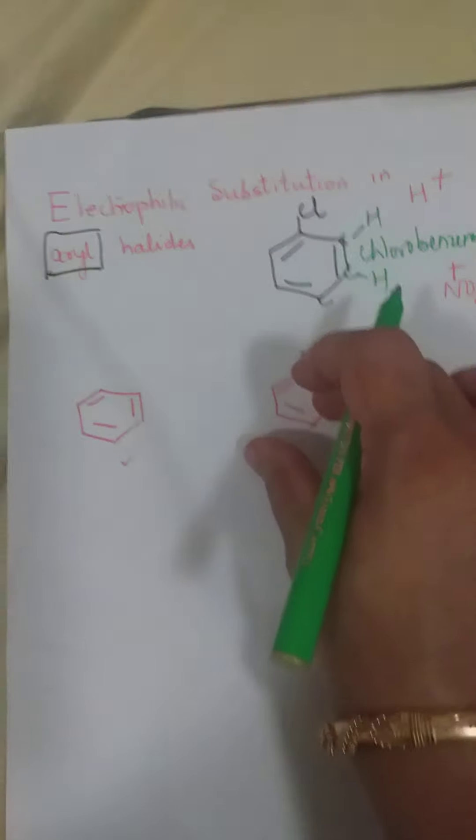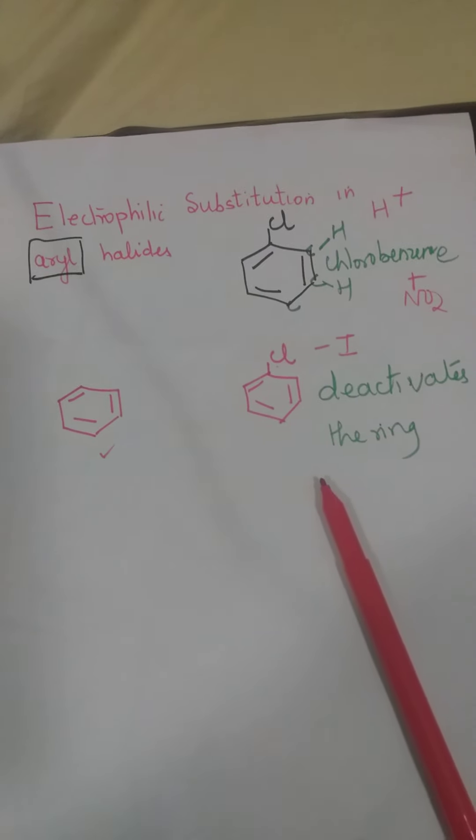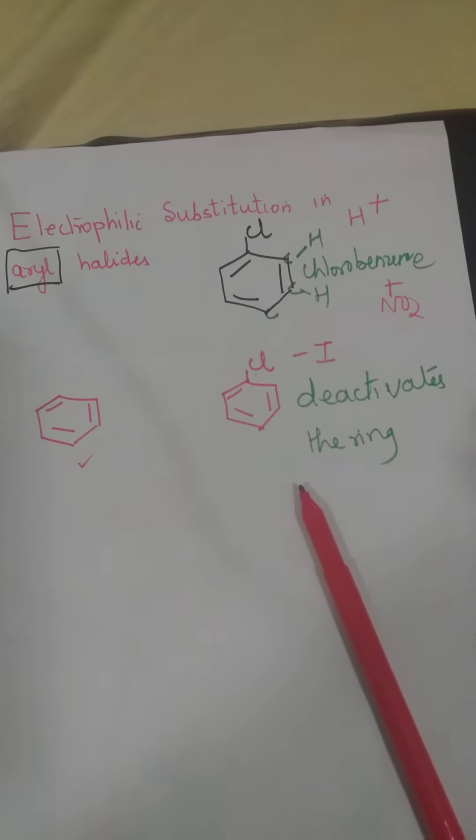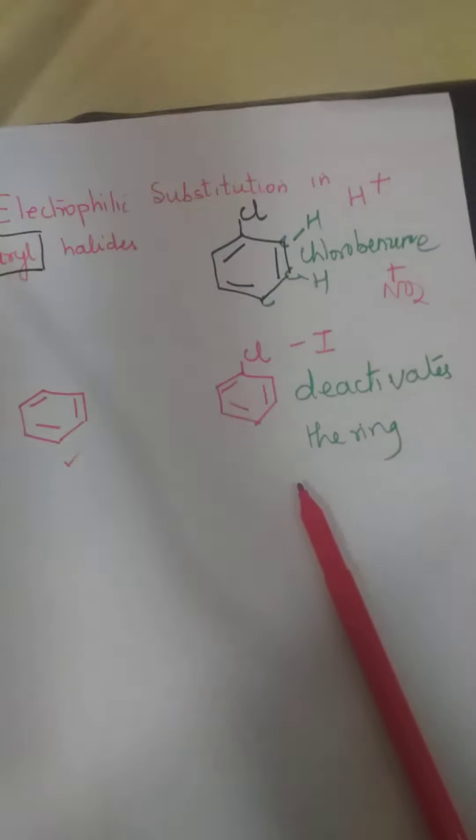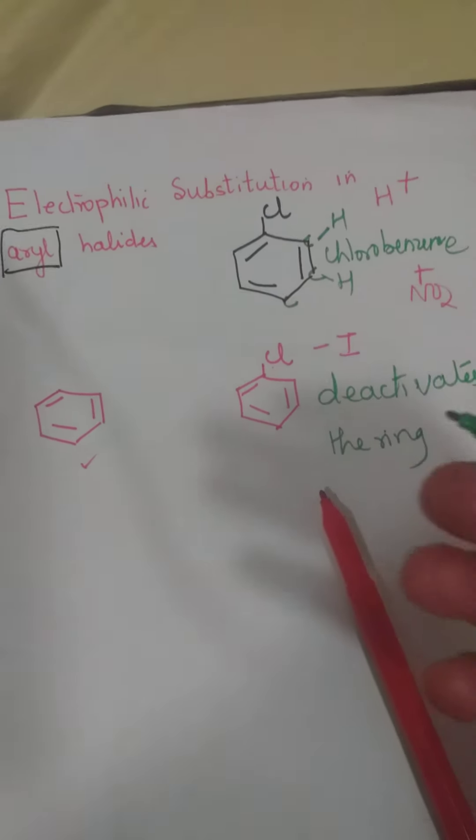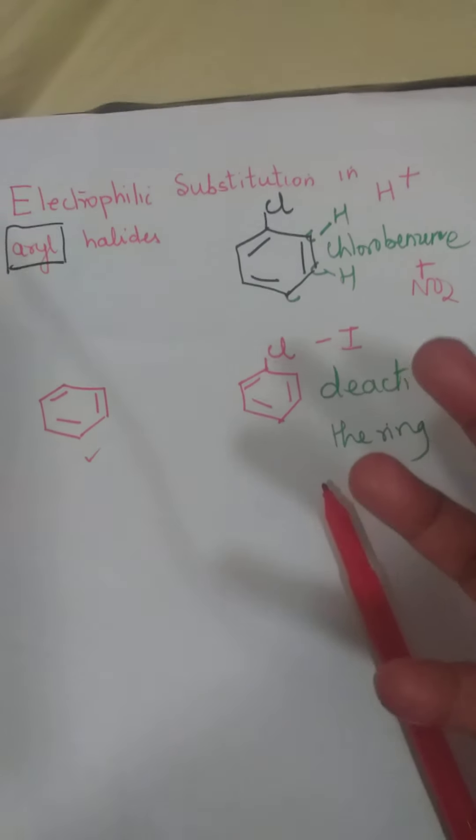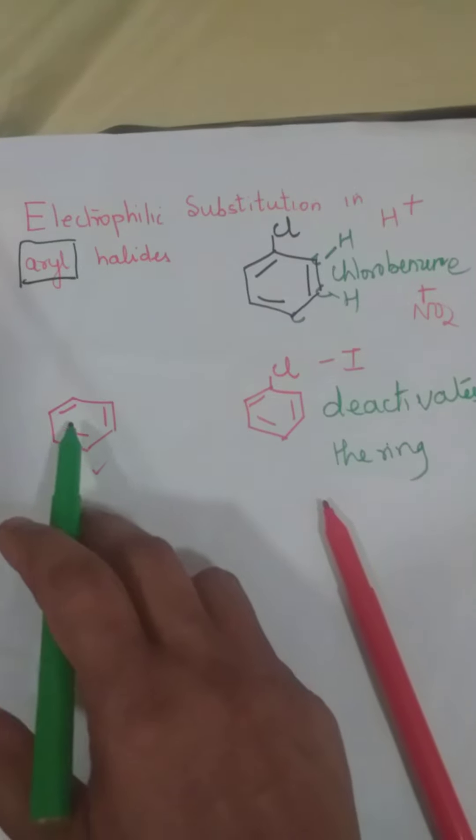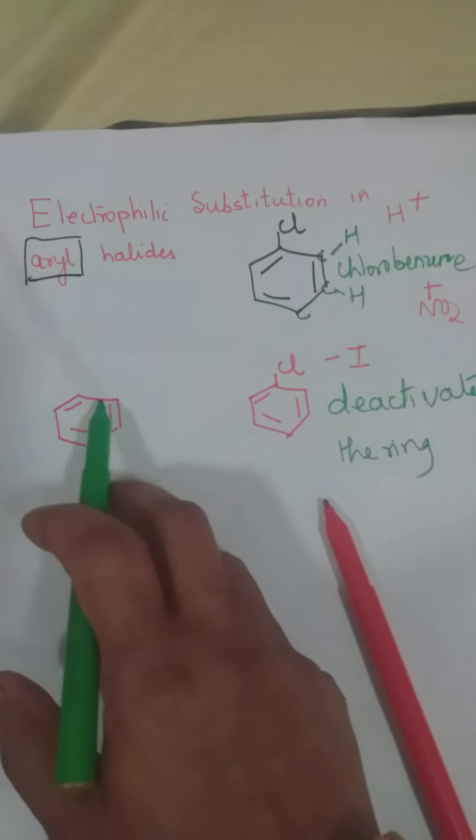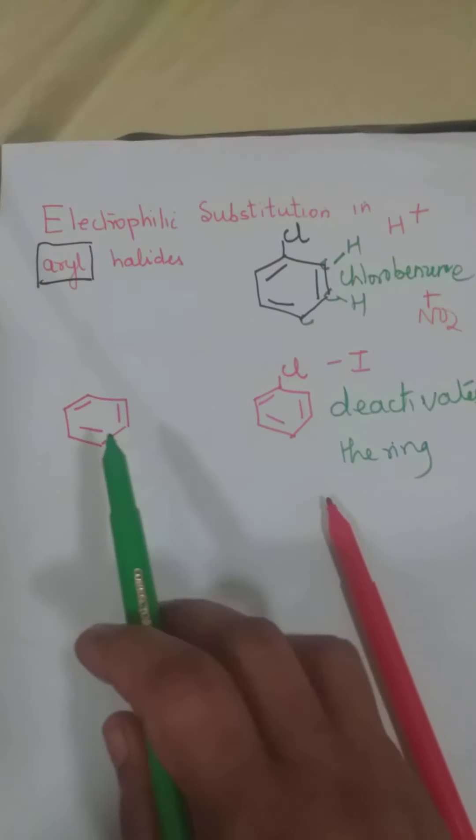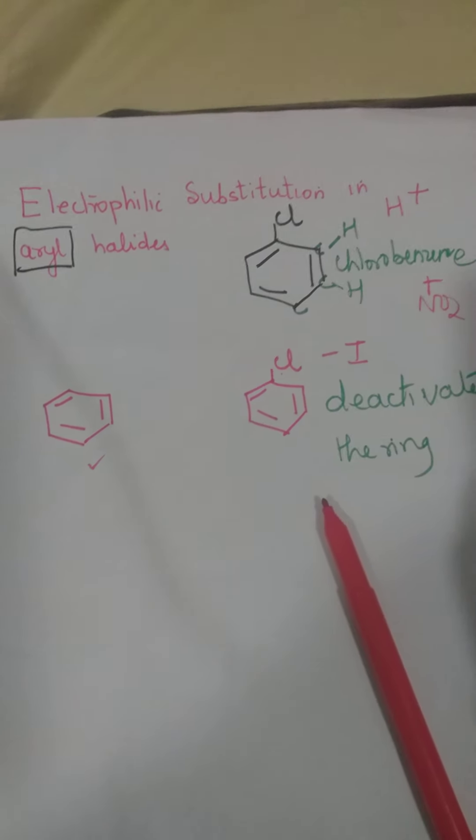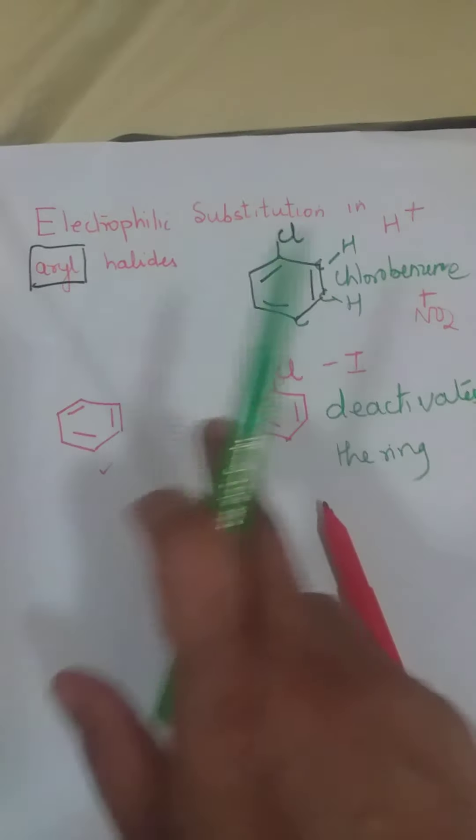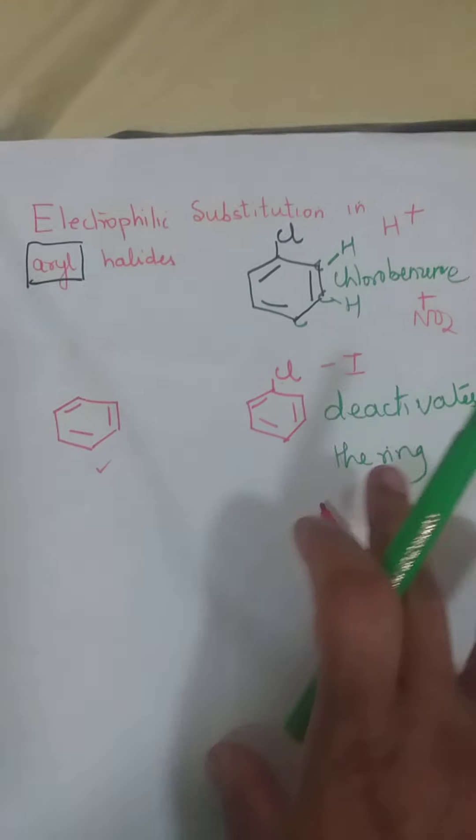Toh, yeh ring less reactive ho jata hai. Because of the presence of halogen, the ring is deactivated. Why? Because of its minus I effect, electron ko kheench leta hai apne aur. Aur, electrophilic substitution agar chahiye, toh, hamare paas electron ka density ho na, zaroori hai. Yahan pe, waisa koi halogen toh nahi hai, toh, ring deactivate nahi hota hai. But, yaad rakhna, aromatic compounds jo hai, waisa bhi, woh reaction bohot dheeray hi deta hai. Substitution bhi bohot dheeray hi deta hai. But, yeh dono mein benzene will be faster.